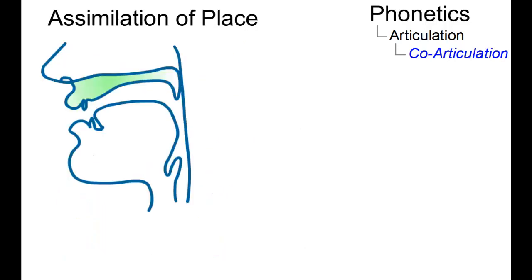Another variant of co-articulation is the assimilation of the place of articulation of one speech sound to that of an adjacent speech sound. For example,